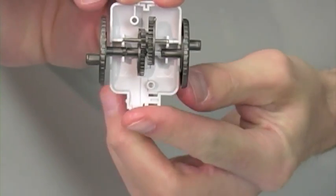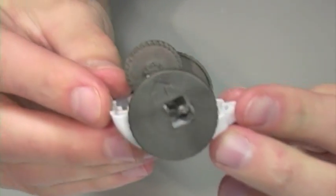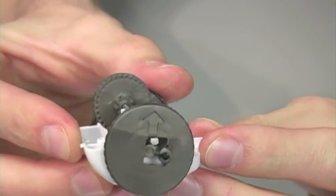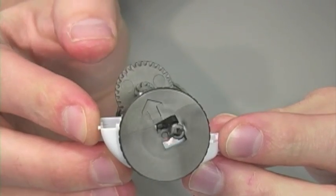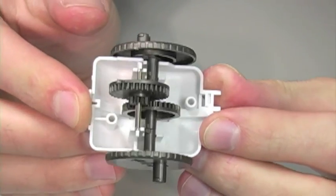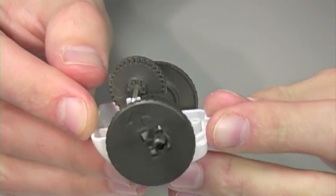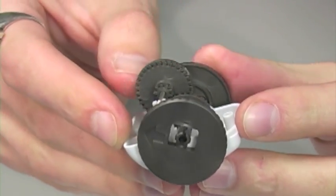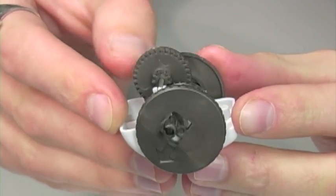Before we finish the lower gearbox I cannot stress enough how important it is to make certain there are no burrs on any pieces. Burrs being the small pieces of plastic that remain on pieces once you cut it free from the molding. In other words, make sure that all of the surfaces are smooth.